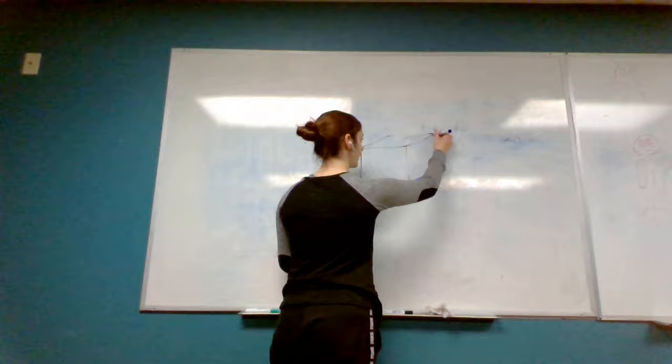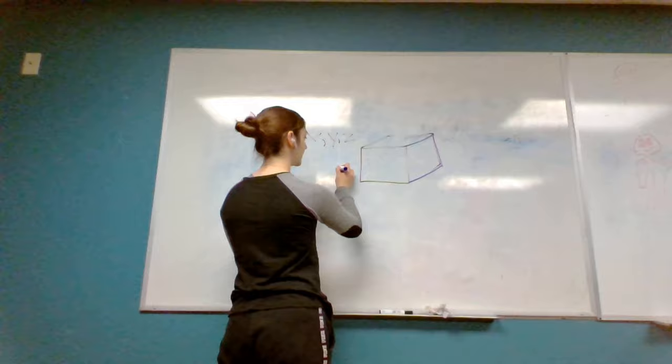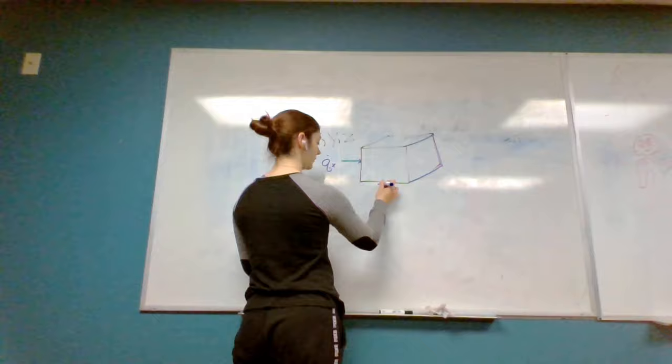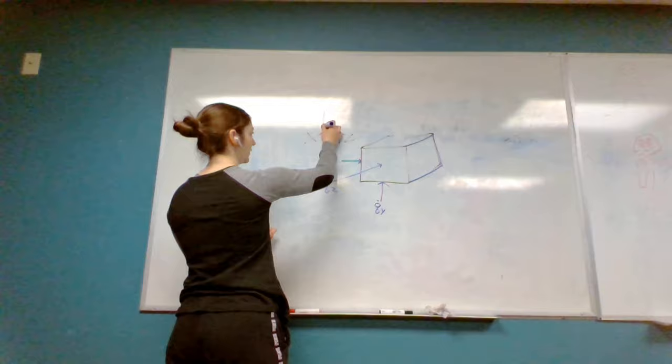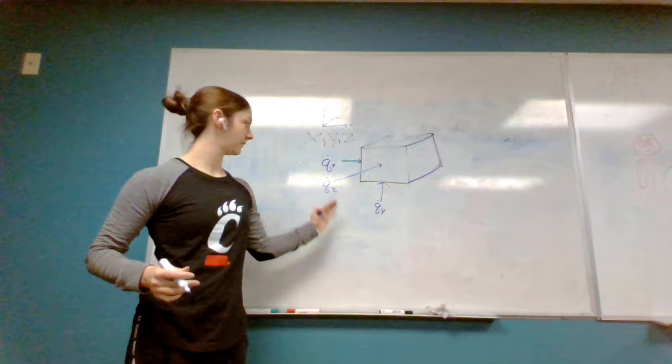I will now be labeling heat flows in and out of this cube with specific coordinates. In the x direction we have a heat flow in, which I will call qx. We also have a heat flow up through the bottom, qy. And finally, we have a heat flow in through the front, qz. Heat flows into our differential volume.